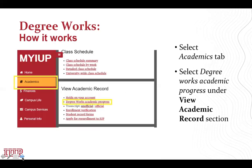To access DegreeWorks, select the Academics tab, then select DegreeWorks Academic Progress under the View Academic Records section.